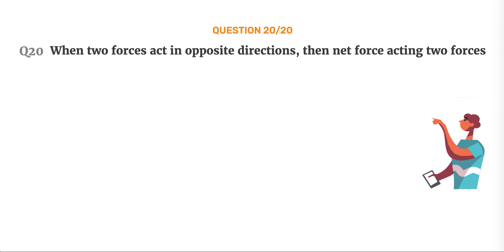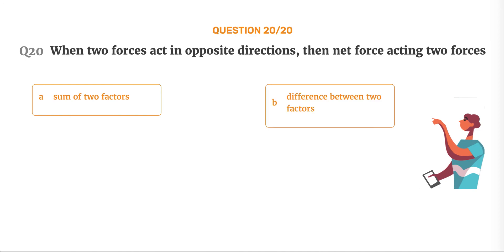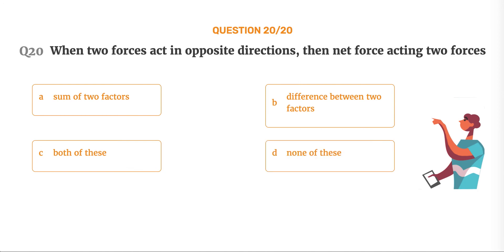Question number 20. When two forces act in opposite directions, then the net force acting is blank. Option A: Sum of two forces. Option B: Difference between two forces. Option C: Both of these. Option D: None of these.